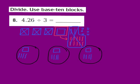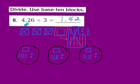Our 12 tenths have been evenly divided among our 3 groups. Now our last step is to share the hundredths. We have 6 hundredths, and 6 divided by 3 gives me 2. So I'm going to distribute 2 hundredths to each of the 3 groups: 1, 2 in each group. Each group has 1 whole, 4 tenths, and 2 hundredths. So 4 and 26 hundredths divided by 3 gives me a quotient of 1 and 42 hundredths.